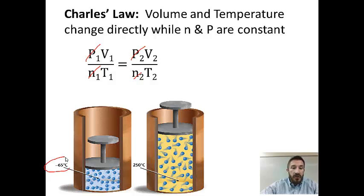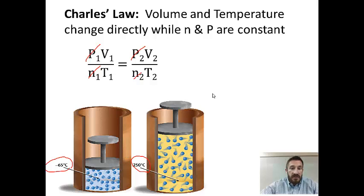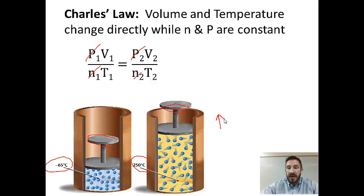Notice the temperatures in the diagram: on one side it's minus 65 degrees Celsius — very cold — and on the other the temperature has been heated up a lot. By heating the temperature, it causes the particles to move faster. The pressure, represented by the mass pushing down the container, has not changed. Since pressure hasn't changed, the faster-moving particles have enough energy to push the container wall up, making the volume bigger.